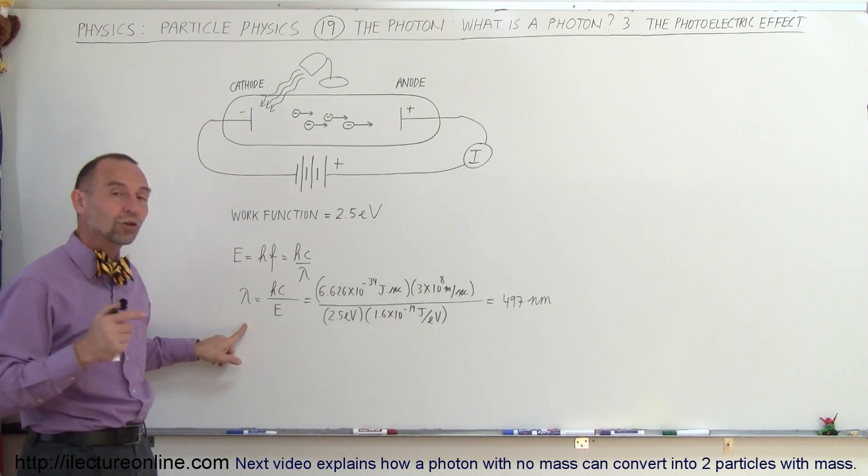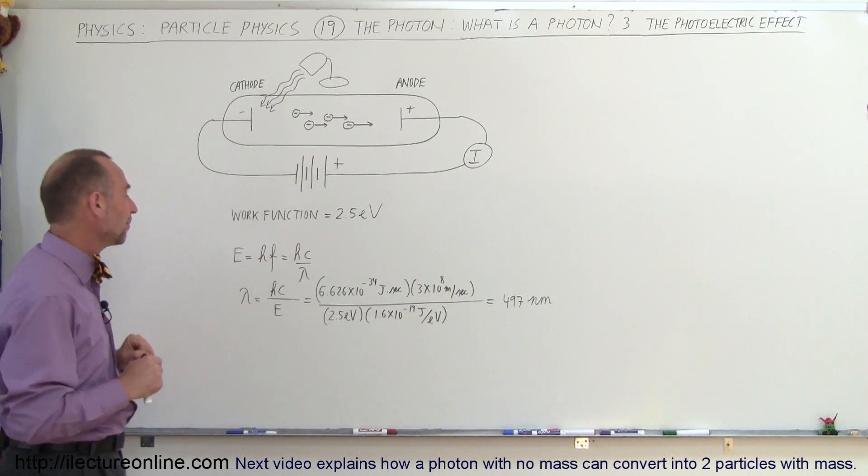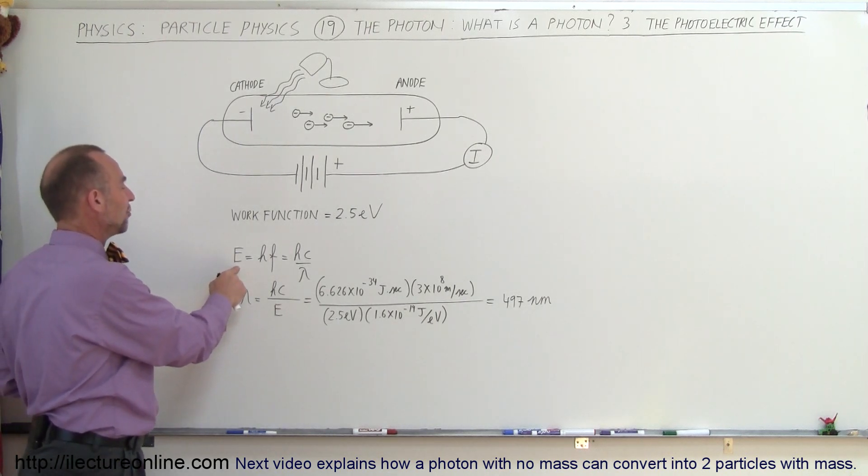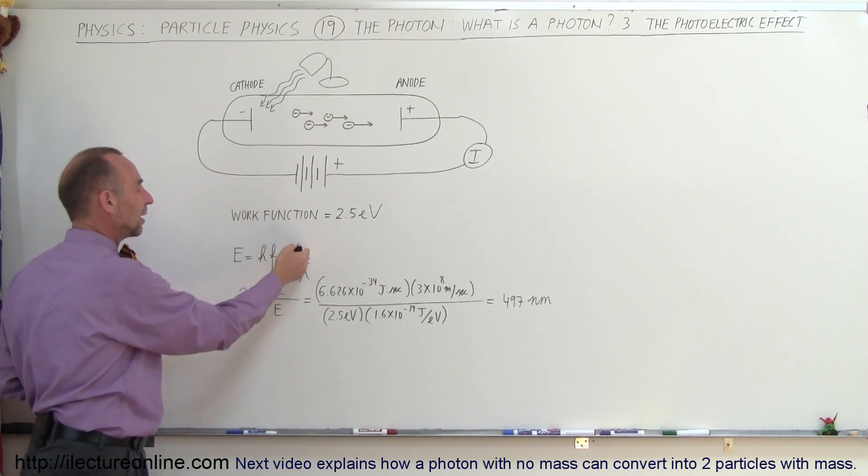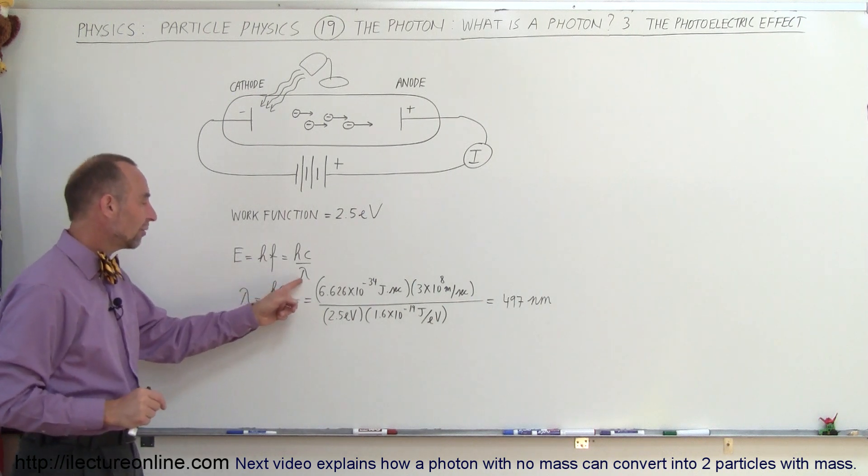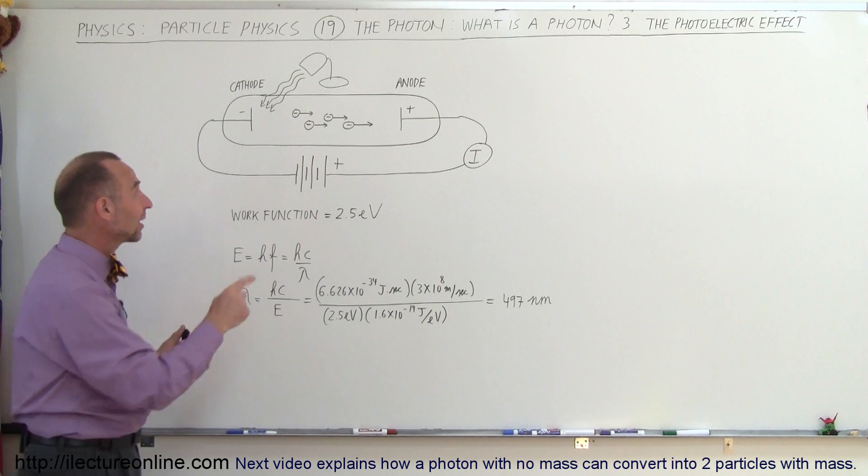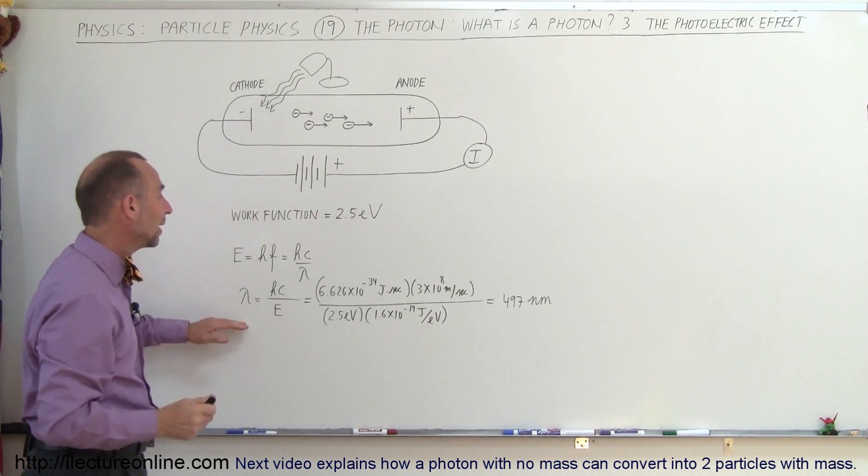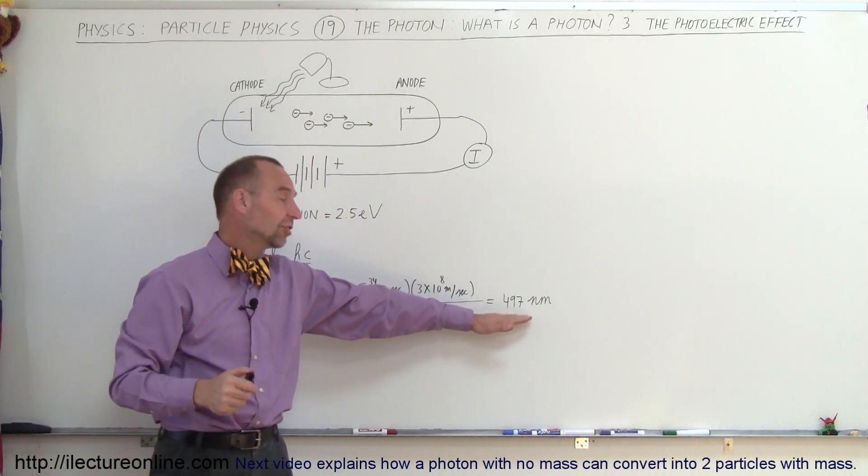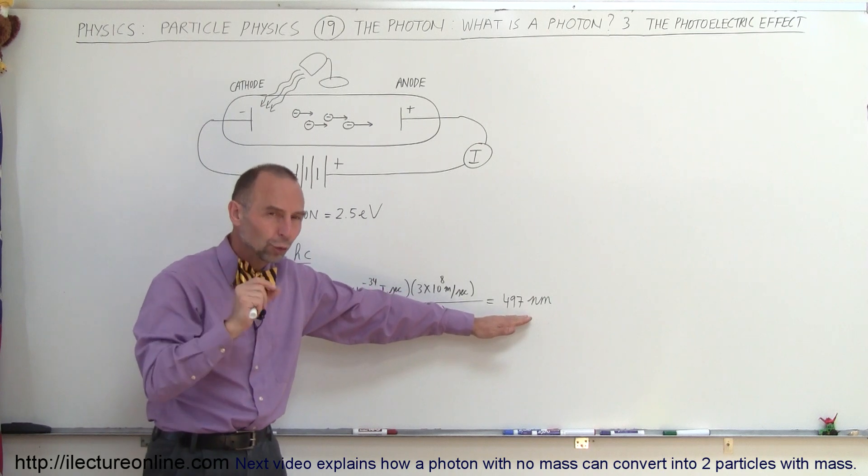and which then would be the corresponding wavelength of that photon. So if we say that energy of a photon is H times F, Planck's constant times the frequency, and since the frequency is the speed of light divided by the wavelength, we can solve this for the wavelength, so the wavelength of a photon required to set an electron free from the cathode would have to be a wavelength of 497 nanometers or shorter.